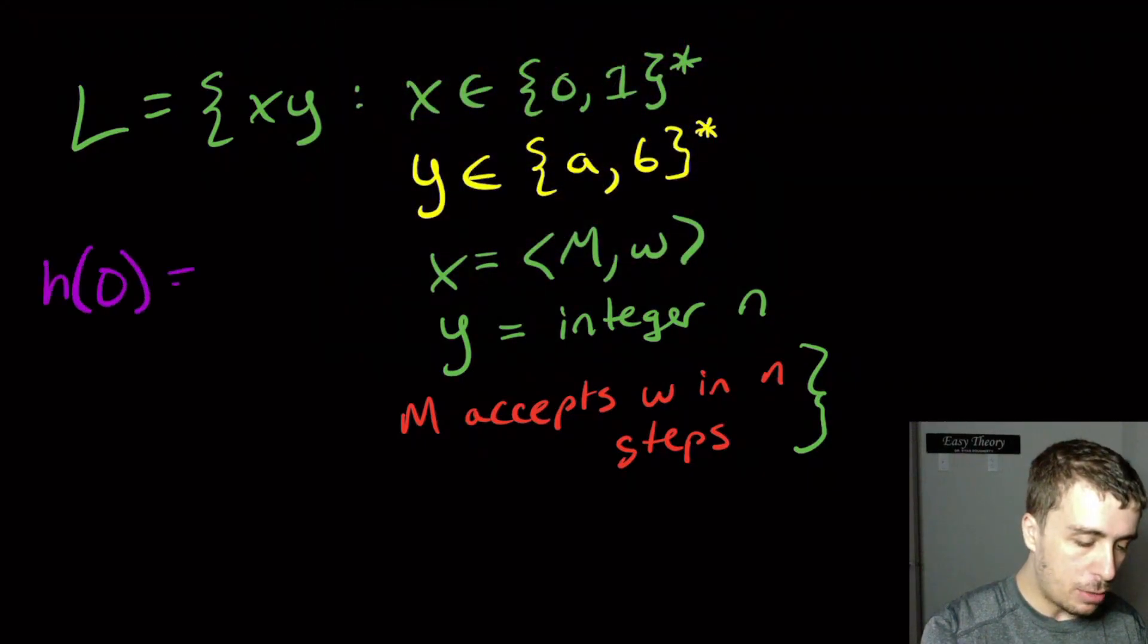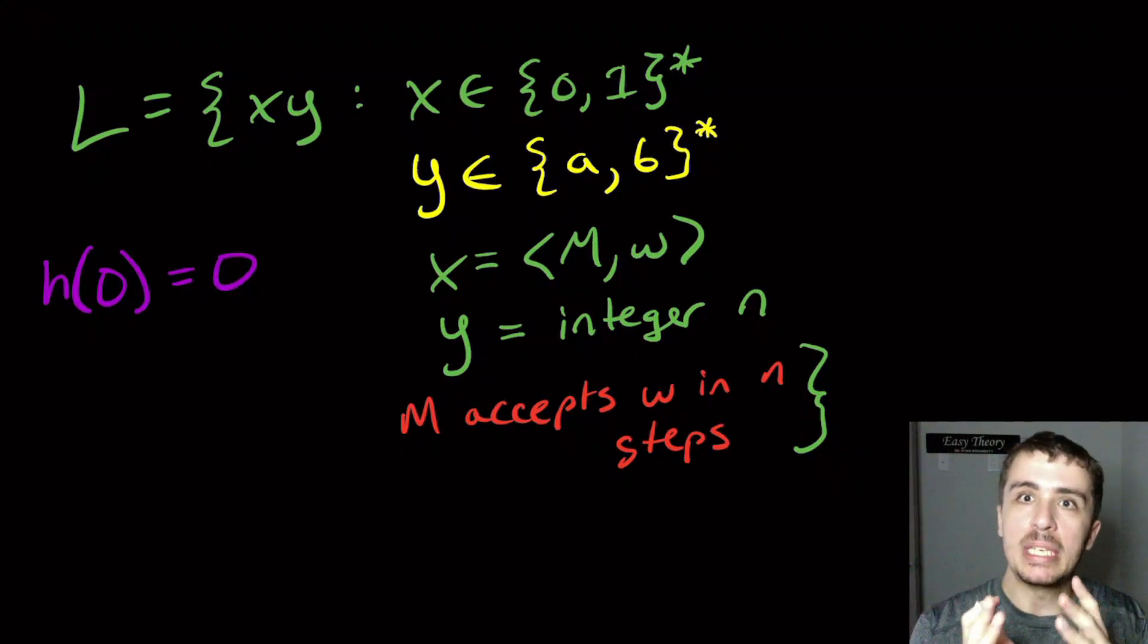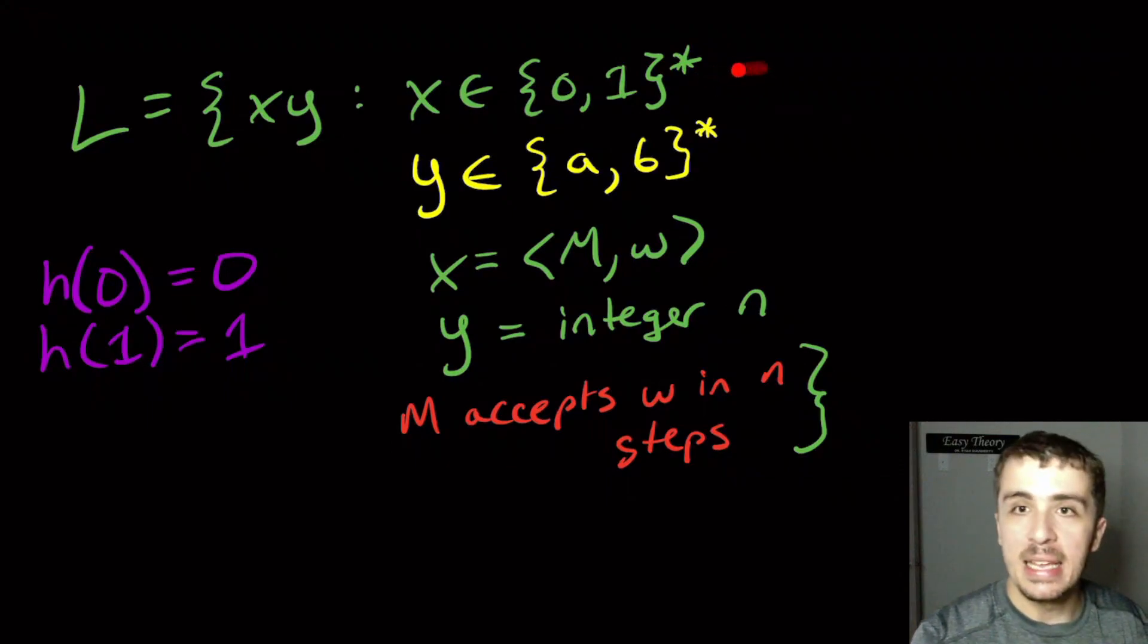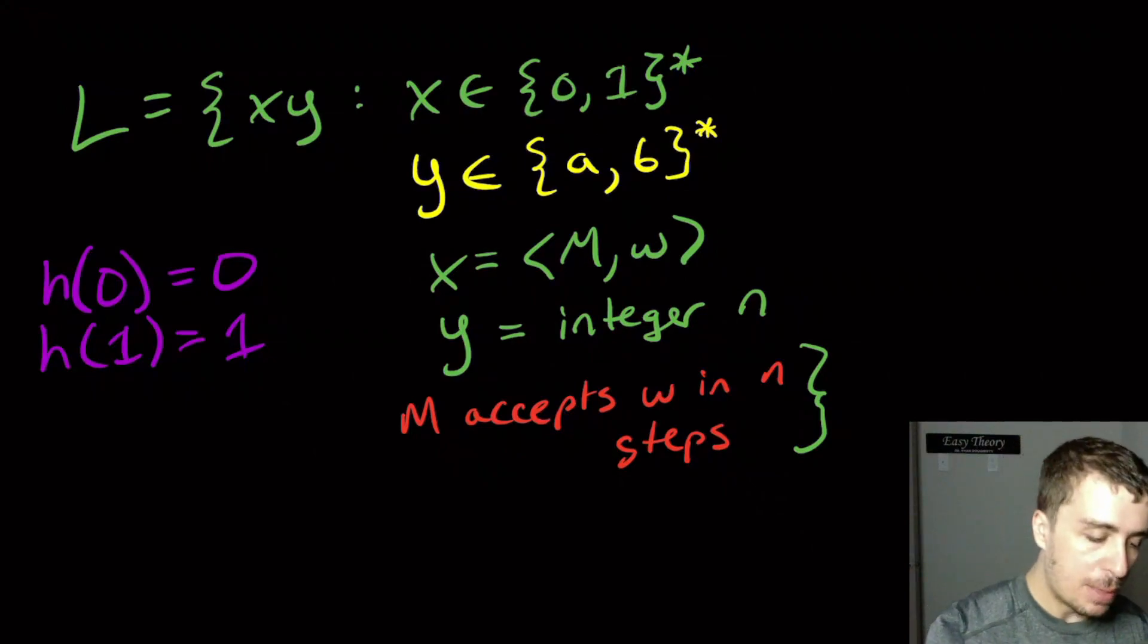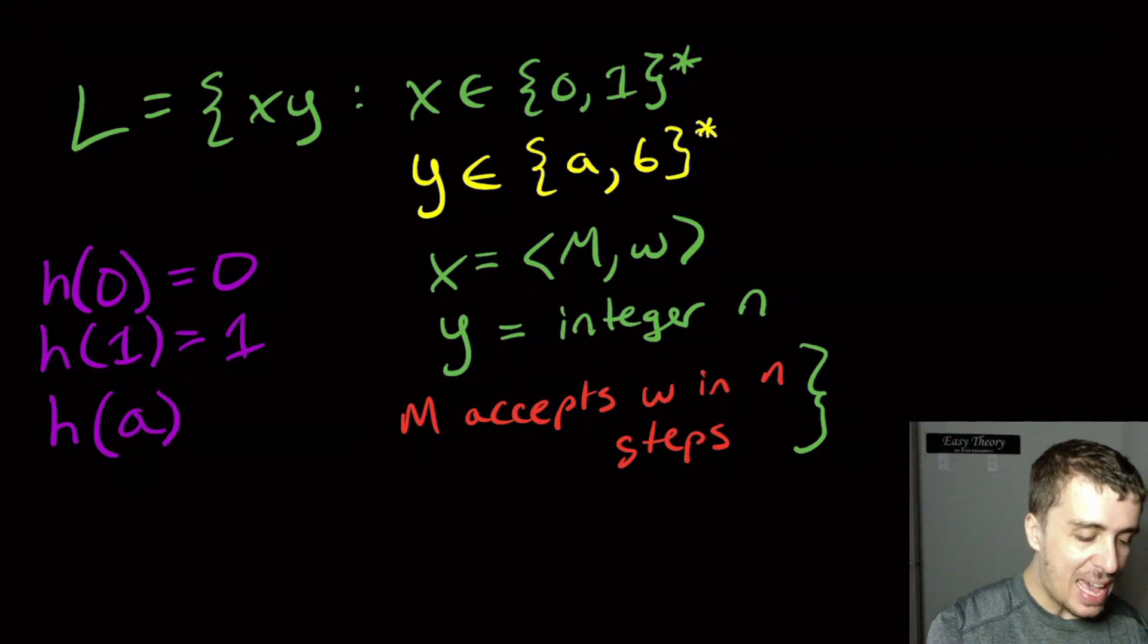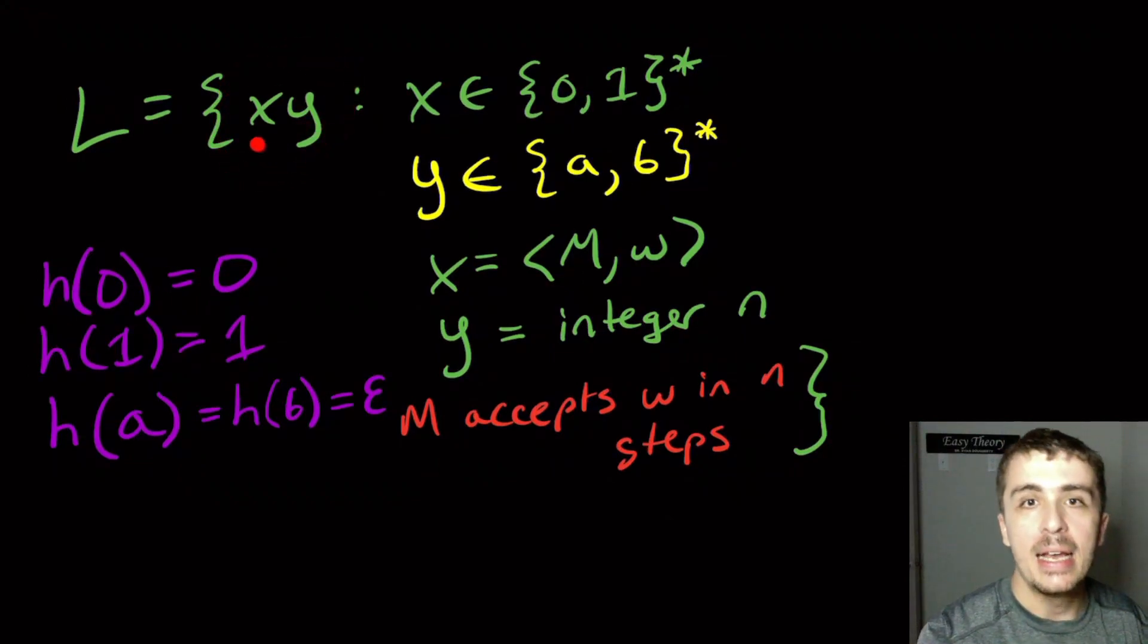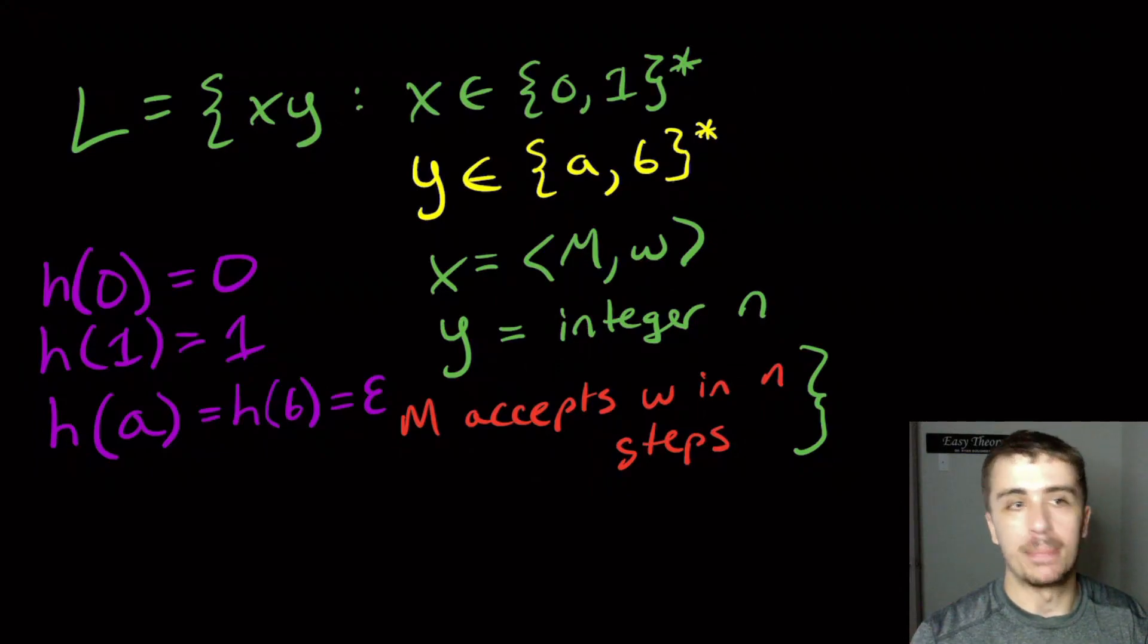So h of zero is going to be zero. So anytime we see a zero, we're going to not change it. If we see a one, we're not going to change it. So that represents in the x part, I'm not going to change the x part whatsoever. I'm going to leave it as is. But the y part is going to change. So h of a is going to be the same as h of b, which is the empty string. So effectively, when we apply the h function to this guy, the x part is going to stay there. And the y part is going to go away because it's just a bunch of a's and b's. And the homomorphism is going to convert all of those to the empty string.